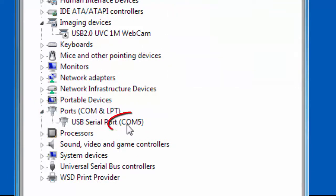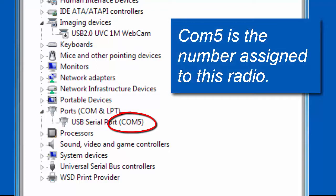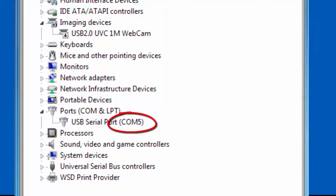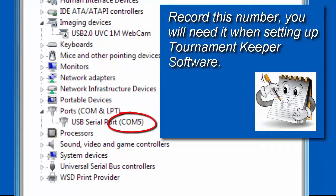In this example, my computer assigned COM 5 to the radio hub that I'm using. Remember, yours will probably be a different number. Write this number down — don't be like me and think you're going to remember it, because if you are like me, you're not going to remember it.